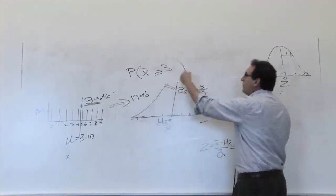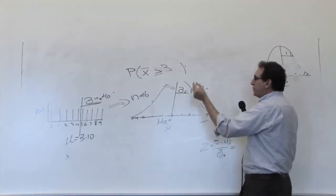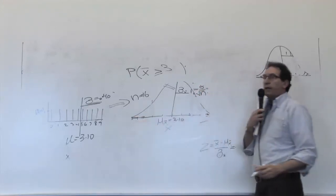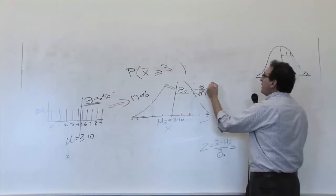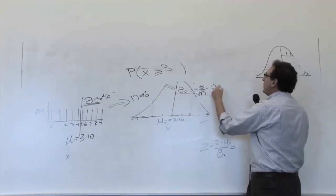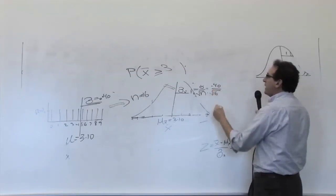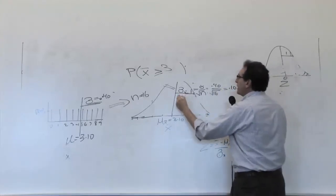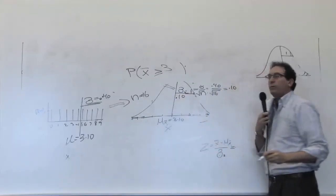The basic shape of the X bar is going to be bell-shaped curve. The middle value here will be the same middle value as that, which is 3.10. The sigma over N will be 0.40, which is the sigma, over the square root of 16, which is the N, which comes out to 0.10. So the amount of spread can be quantified as a pretty small 0.10.